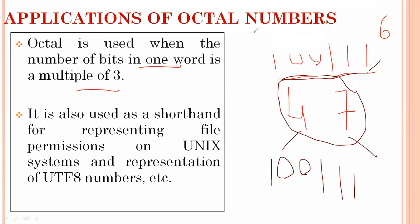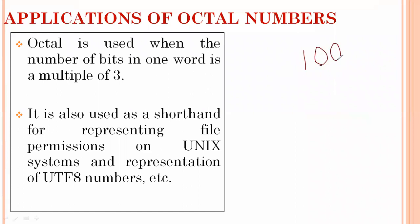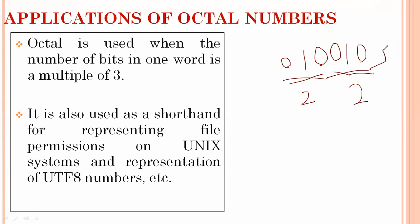For another example, suppose we have the binary number 10010. Since it has five bits, which is not a multiple of three, we add a leading zero to make it 010010, then convert it to give us 22 in octal. Octal is also used as shorthand for representing file permissions on Unix systems and for representation of UTF numbers.